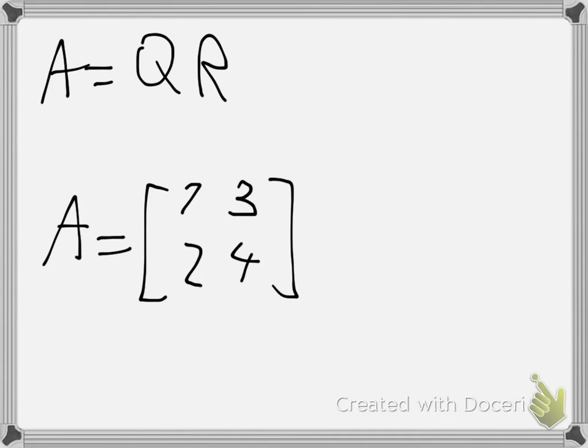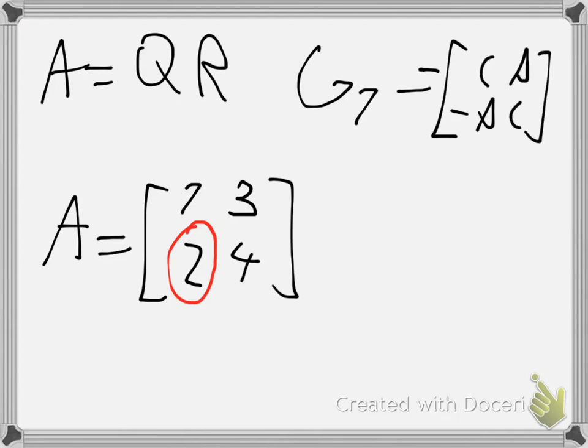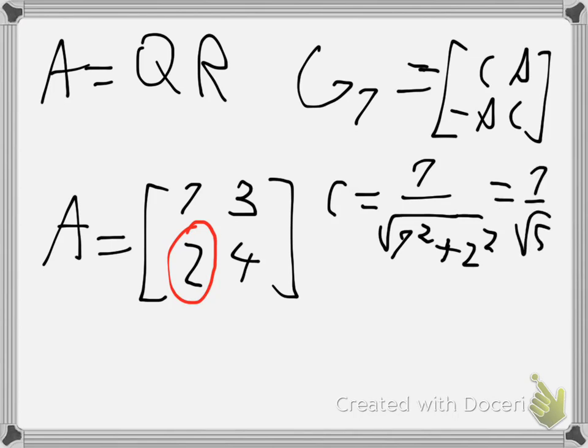So my goal will be to eliminate this element here. My first and only given rotation will be of the form negative sine, the cosine in the diagonal and the sine here. And so the cosine will be the top element, so 1 over the square root of that element squared and the element we want to eliminate squared, so be 1 over square root of 5.